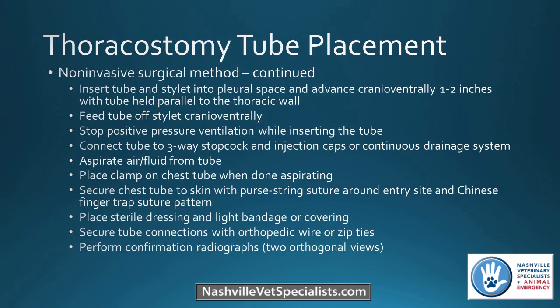Bluntly dissect into the thorax with hemostats, spread them open, and pass the chest tube through the hole. Once in the thoracic space, advance the tube cranially and ventrally while holding it parallel to the chest wall. Feed the stylet off in the same direction. If the patient is under anesthesia, stop ventilating while the tube enters the chest cavity. Connect it to your stopcock and drainage system, then aspirate air or fluid. Secure the chest tube with a purse-string suture around the entry site and a finger-trap suture after that. Cover with a light bandage and confirm placement with two-view chest x-rays.